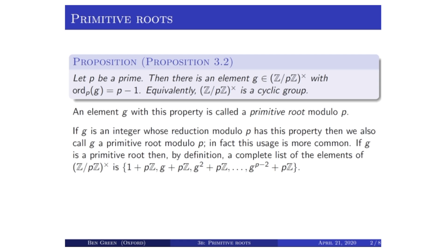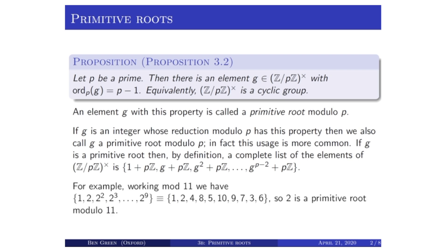If g is a primitive root, then a complete list of the elements of z mod p z star is g, g squared, up to g to the p minus two, and one — or more accurately, the cosets of p z by those elements: one plus p z, g plus p z, g squared plus p z, up to g to the p minus two plus p z. For example, when p is 11, it turns out that two is a primitive root modulo 11, because one, two, two squared, two cubed, and so on up to two to the nine turn out to be distinct elements modulo 11. So two is a generator for z mod 11 z star, which is a cyclic group of order 10.